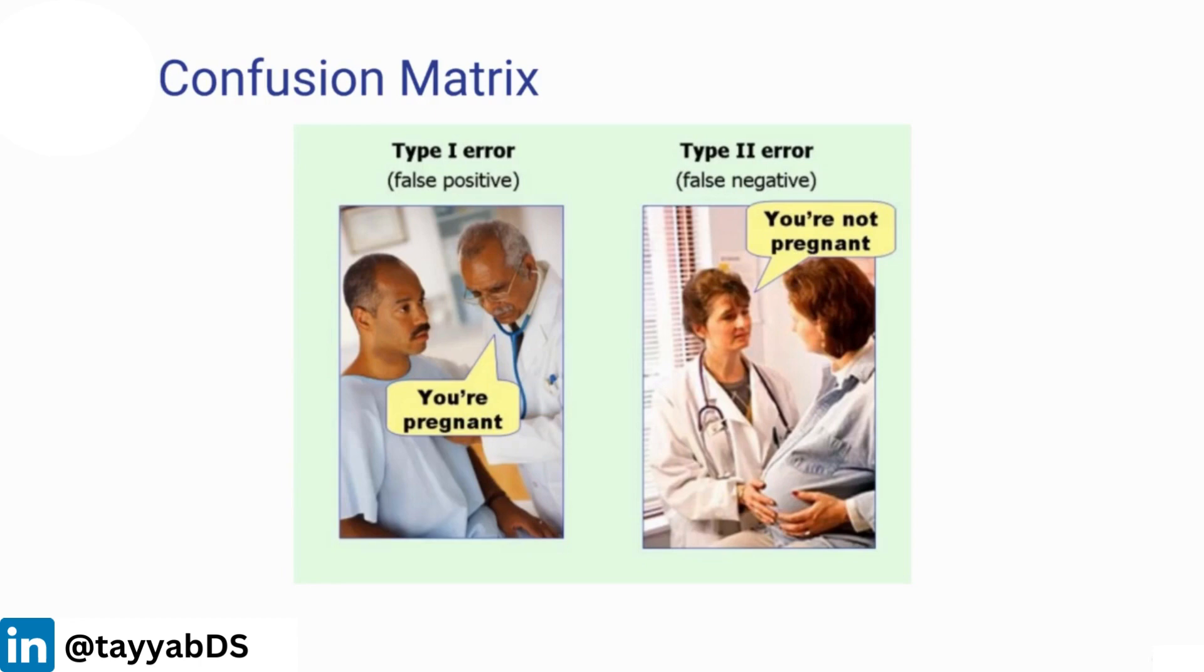Another common thing to keep in mind is that in statistics, false positives and false negatives are often referred to as type 1 errors and type 2 errors. Here we can see a funny example to keep in mind the differences between the two: a false positive, here we're telling the man that they're pregnant when clearly this person cannot be pregnant; or the false negative, in which case this woman is clearly pregnant, but we're telling them they're not pregnant. In statistics, you may see type 1 error and type 2 error instead of the terms false positives and false negatives.